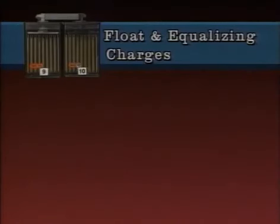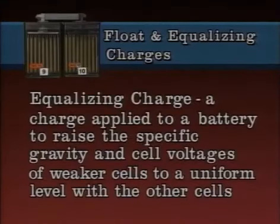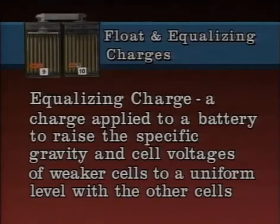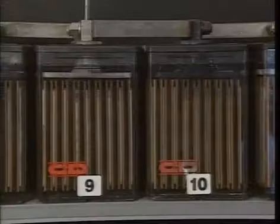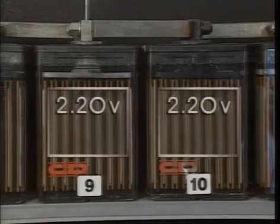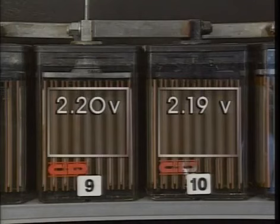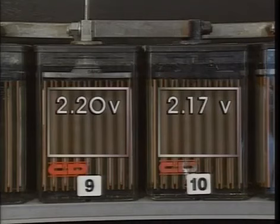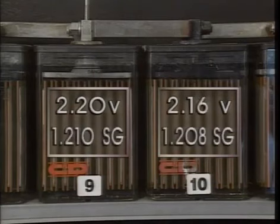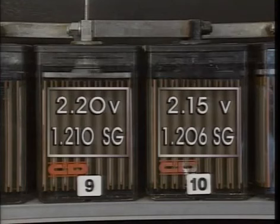Another type of charge that may be applied to a battery is an equalizing charge. An equalizing charge is applied to a battery to raise the specific gravity and cell voltages of weaker cells to a uniform level with the other cells. When battery cells are in service, the cell voltages tend to become unbalanced — the voltages of some cells fall below the level of the others, and specific gravity will begin to fall along with the voltages.